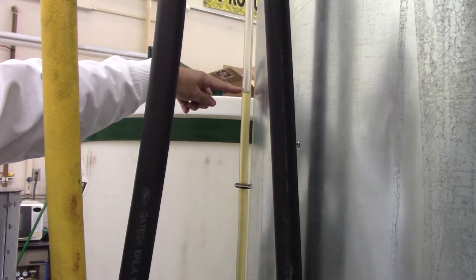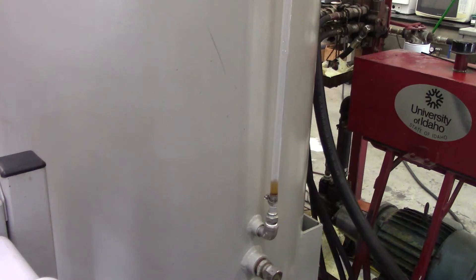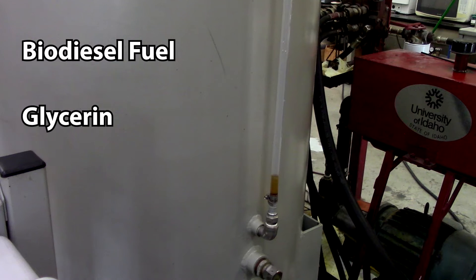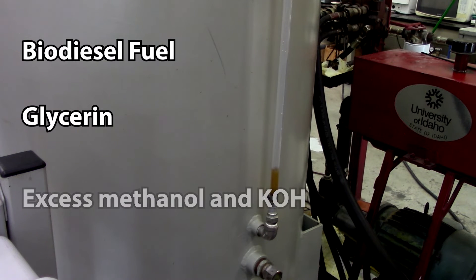After the hour, we pump the contents of the reactor into another holding tank. The tank is filled with a mixture of biodiesel fuel, glycerin, which is a byproduct of the biodiesel reaction, and excess methanol and catalyst.